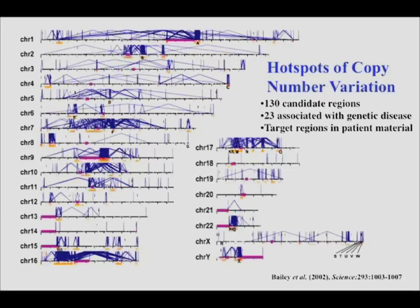The way to think about these duplications is as segments of the genome that actually duplicated somewhere in the past — millions of years ago, but not so far that we can't still see they're highly identical. We knew from studies done almost 75 years ago that when you have perfectly identical duplicated sequences, they can trick the recombination machinery during meiosis such that a recombination event occurs where it shouldn't.